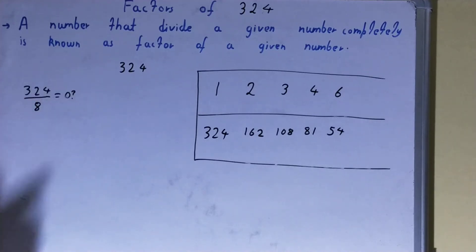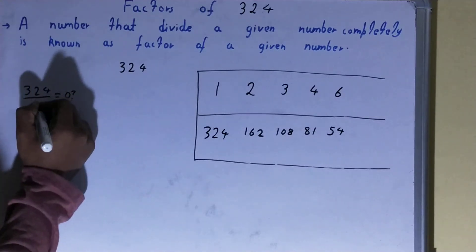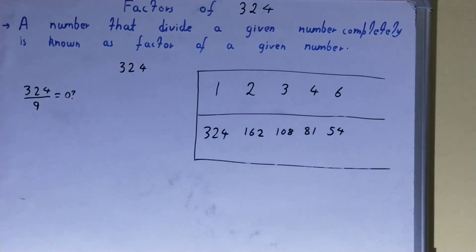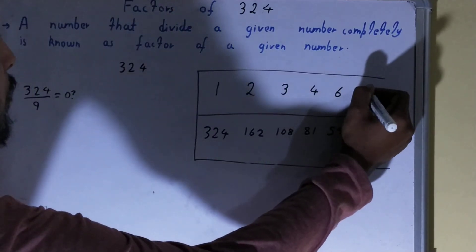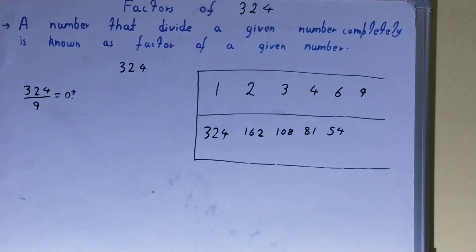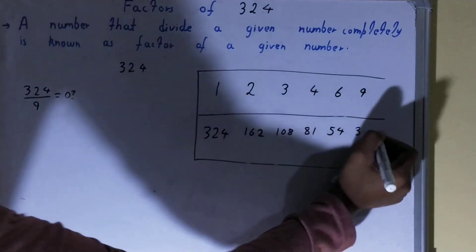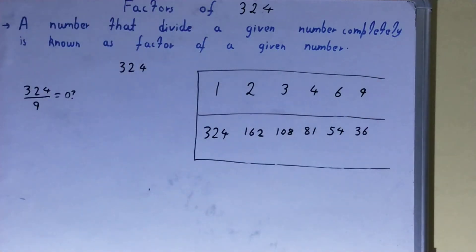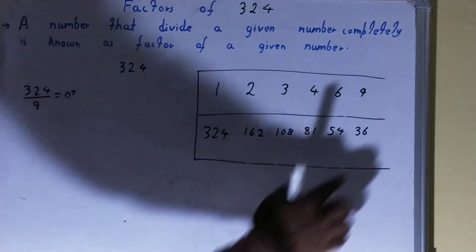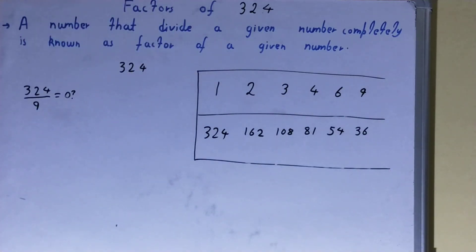After 6, we check with 7: not divisible. We check 8: not divisible. We check 9: 9 × 36 = 324, so 9 is a factor and 36 will also be a factor.